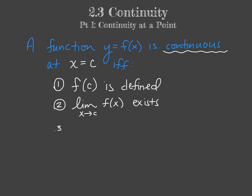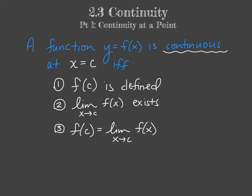Lastly, f of c needs to equal that limit. So if there's an issue with condition 1 or 2, we can't have condition 3. Our function needs to be defined when we plug in c, the limit needs to exist by checking left and right-sided limits, and then the function value and the limit must be the same value. If all three of these hold, we can say that our function is continuous at x equals c.